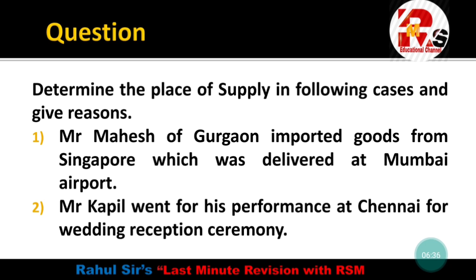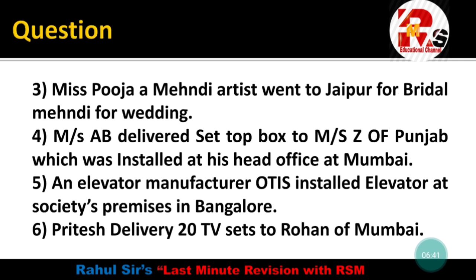Point C: Miss Pooja, a mehendi artist, went to Jaipur for a bridal wedding. Again this is the concept of artistic performance — she is a mehendi artist going to Jaipur for a bridal wedding. So where is the place of supply? The place of supply is Jaipur.